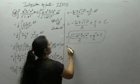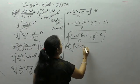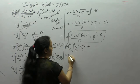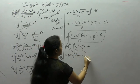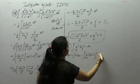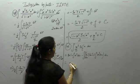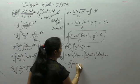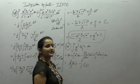Next is the integral of x² tan⁻¹ x — taking the inverse function as first and algebraic as second. Using integration by parts: first function integral of second, minus derivative of first function into integral of second function. The integral of x² is x³ by 3, and the derivative of tan inverse x is 1 upon (1 plus x²).